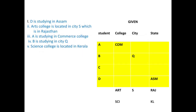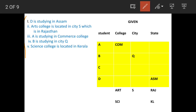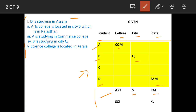We have some more inputs. We'll draw a table with columns: student, college, city, state. The given information is: D is in Assam; Arts college is in city S, which is in Rajasthan; A is in commerce college; B is in city Q; and science college is in Kerala.